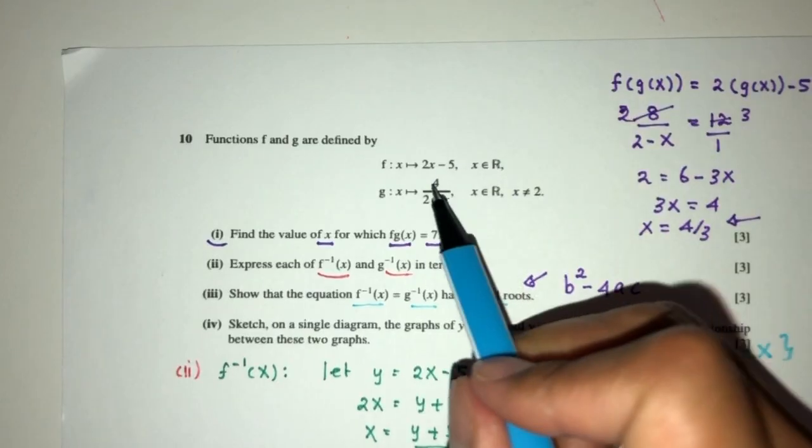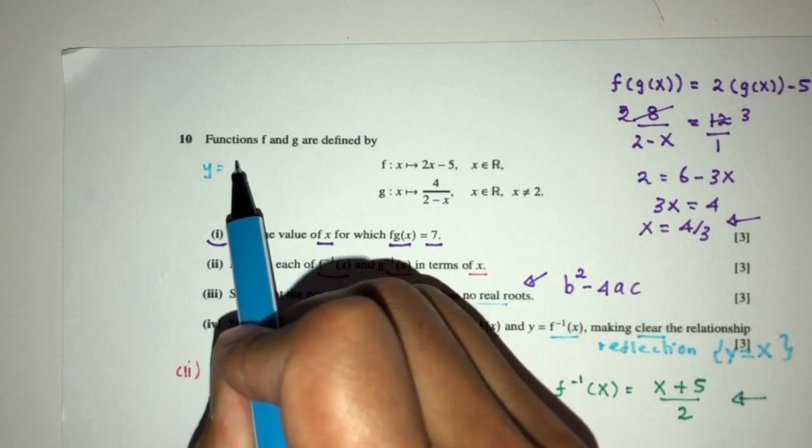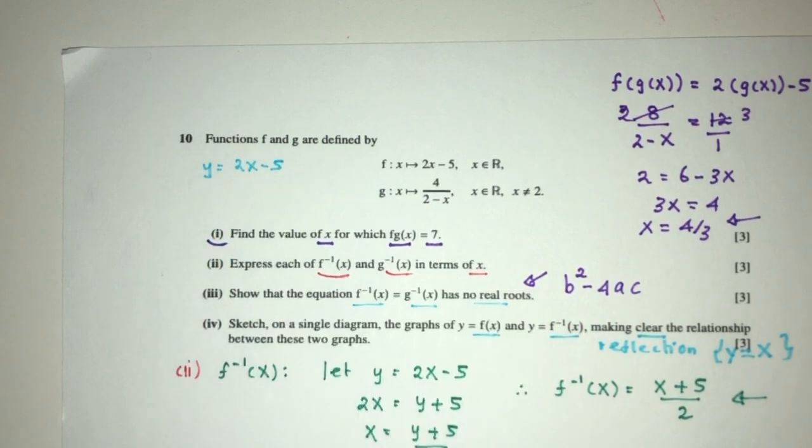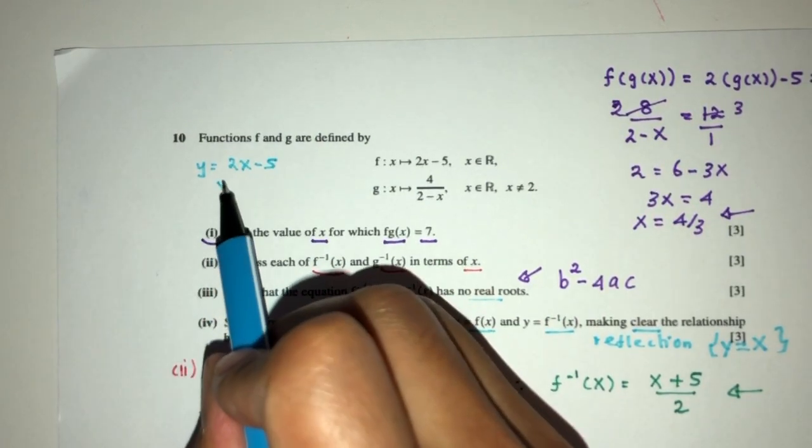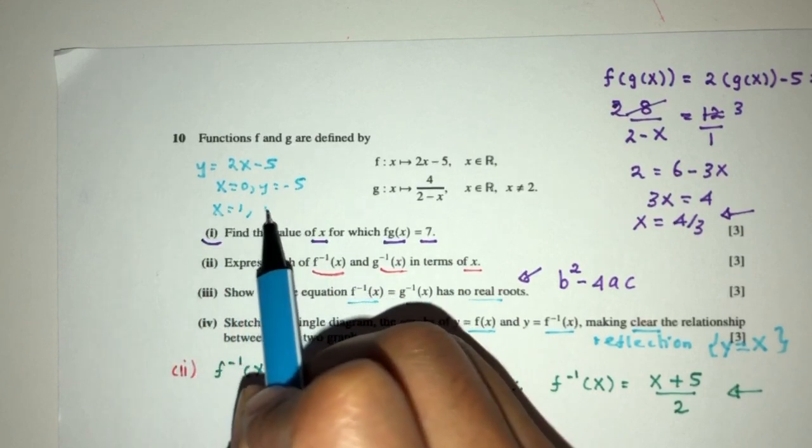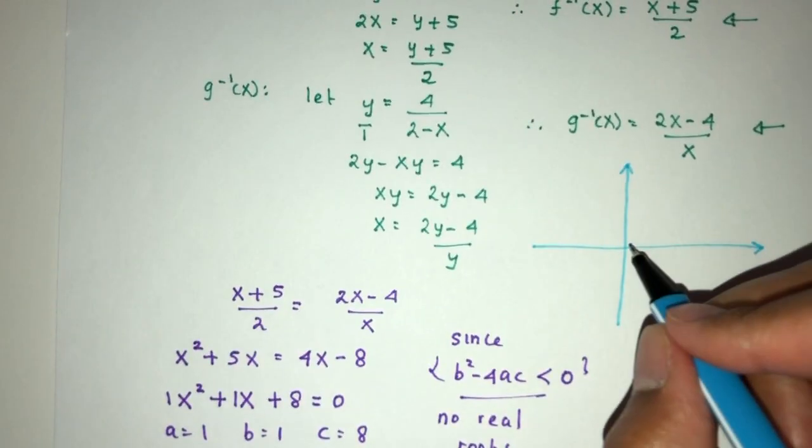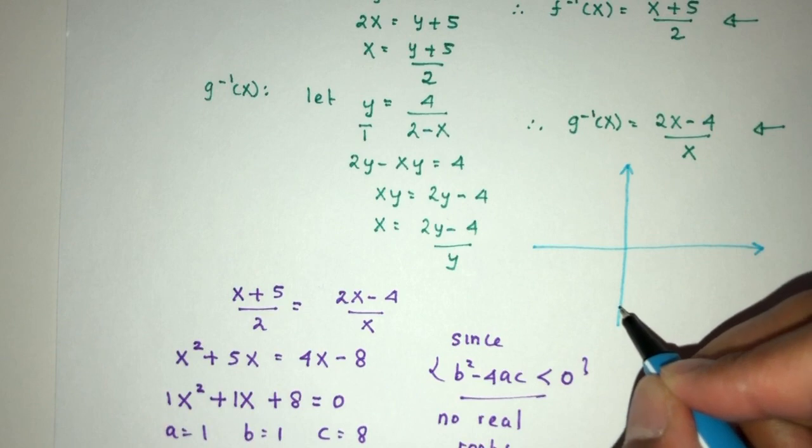Let me sketch this one. So I have y = f(x) = 2x - 5. If x = 0, y = -5. If x = 1, y = -3. So the first point is (0, -5), here. And (1, -3) will be somewhere over here.